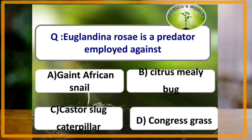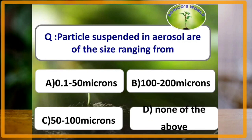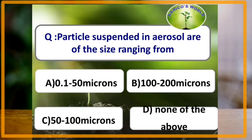Euglandina rosea is a predator employed against which of the following? The answer is giant African snail. Particles suspended in aerosol are of the size ranging from 0.1 to 50 microns.